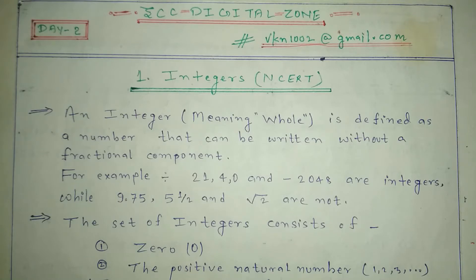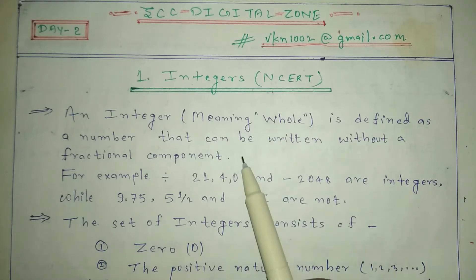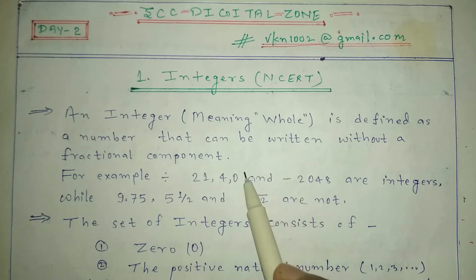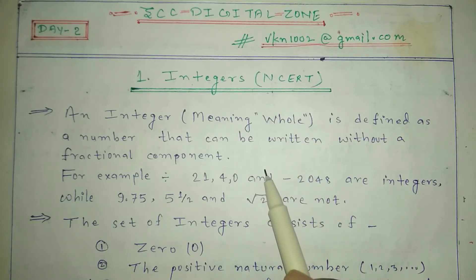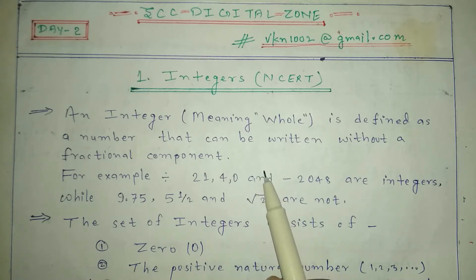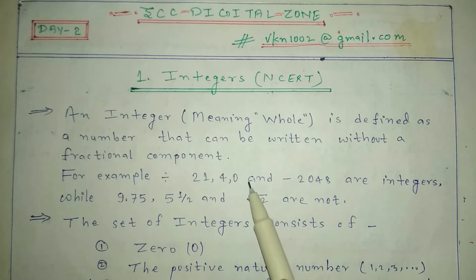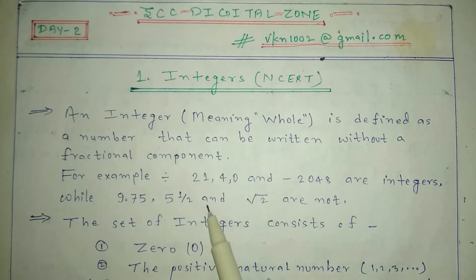So these are the basic rules that we will study today in this first class. An integer, meaning 'whole', is defined as a number that can be written without a fractional component. This means that an integer is a type of number which does not include a fractional component — we only include whole, complete numbers.